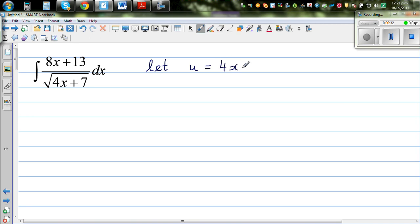So my ultimate aim is to write the whole thing in terms of u. I'm going to write this in terms of u, also dx in terms of u. So first let's differentiate. This is du by dx is equal to 4, which implies 1 quarter du is equal to dx.